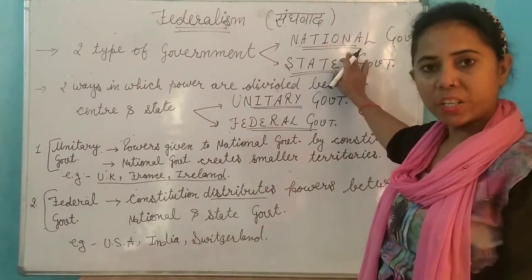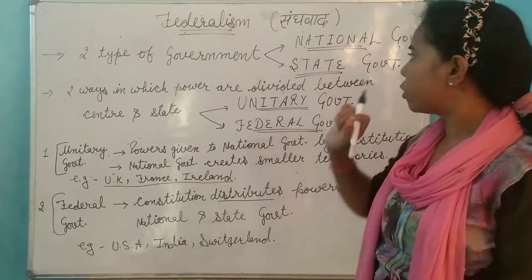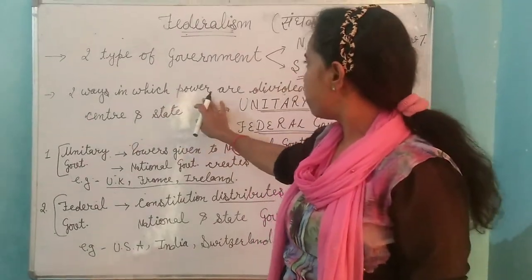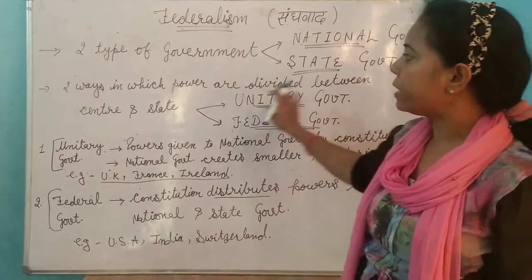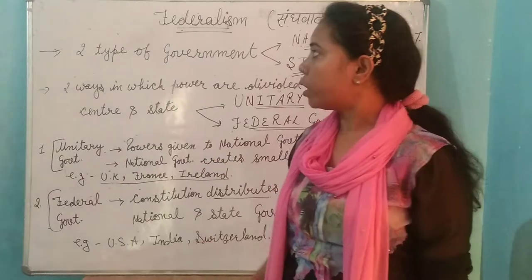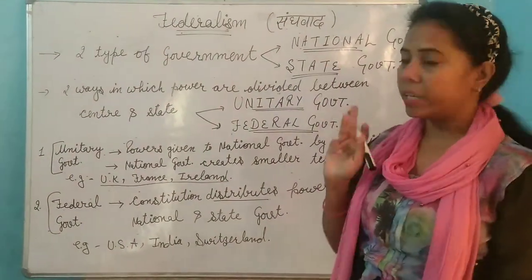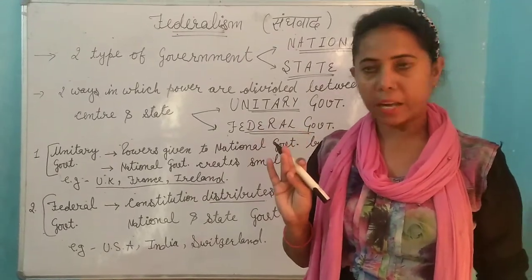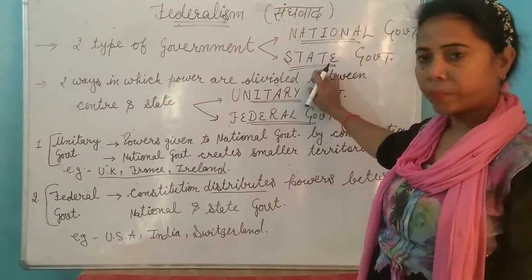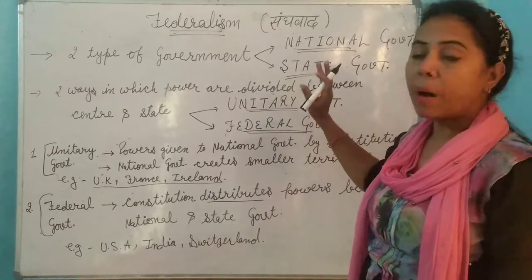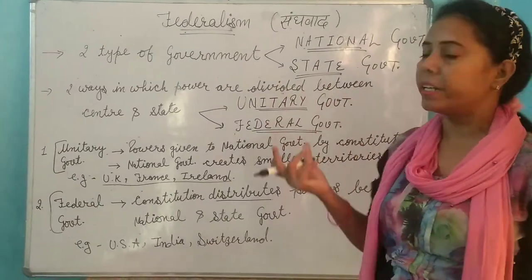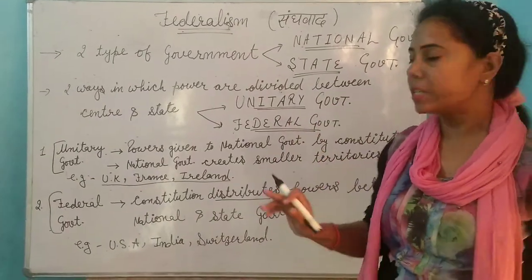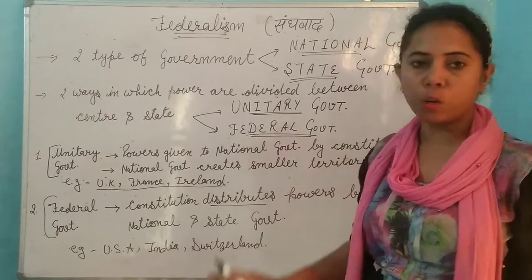Next point: two ways in which power are divided between center and state. Humne abhi padha ki do type ki government hai — national level par aur state level par. Toh in dono ke andar power ko kis tarike se divide karna hai? Us tarike se jo government banti hai, two types ki banti hai: first is unitary and second is federal government.